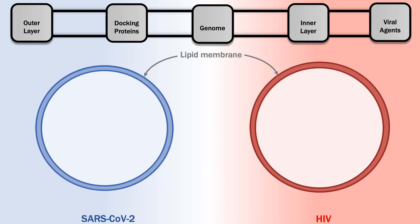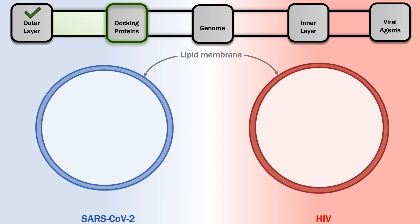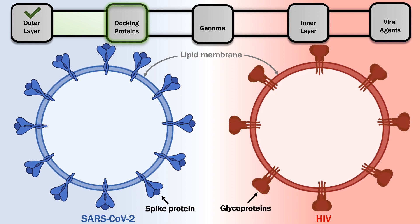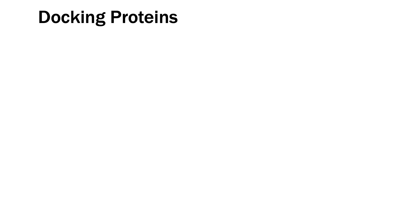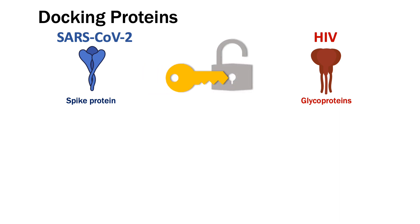Viruses first need to dock with a cell in order to infect it. In both viruses, the structures that allow them to fuse with cells are called glycoproteins, but they have different structures in both viruses and have different names. In the coronavirus, they're called spike proteins, or S proteins for short. In HIV, the docking proteins are called glycoproteins, sometimes called GP proteins. Both of these proteins are important in allowing entry into the cell — they act as a key to unlock the cell so the virus can ultimately cause an infection and hijack the cell's machinery.